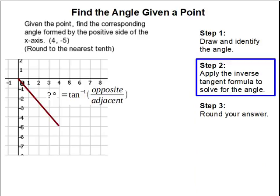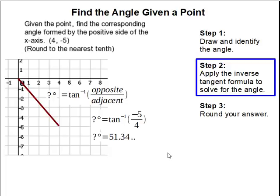Step 2: Apply the inverse tangent formula to solve for the angle. To find this angle, we can use the formula of the inverse tangent of the opposite over the adjacent. The opposite is this side and the adjacent is this side. So the opposite is negative 5 and the adjacent is 4. Then we take the inverse tangent of that, and that gets us 51.34.